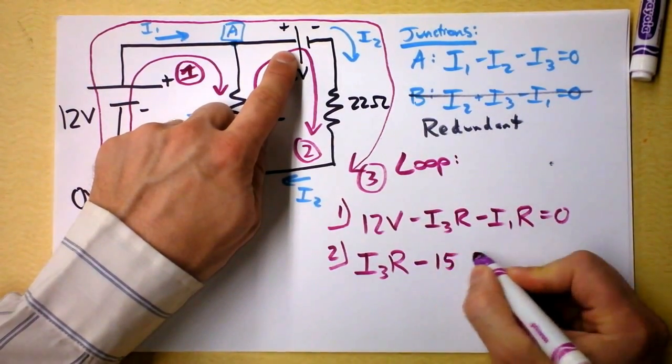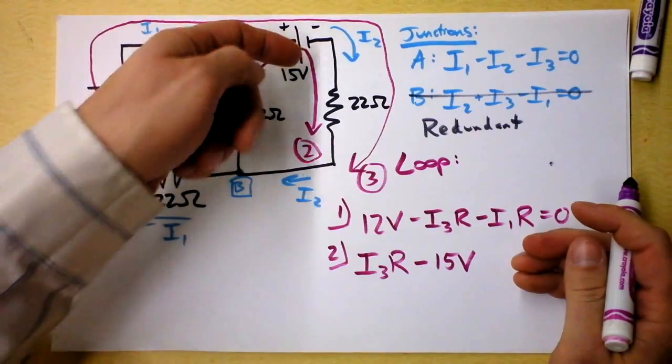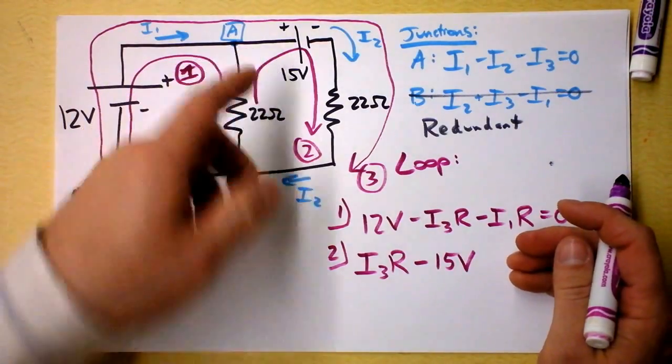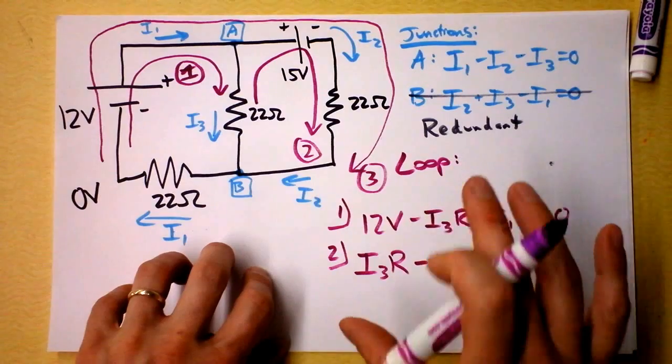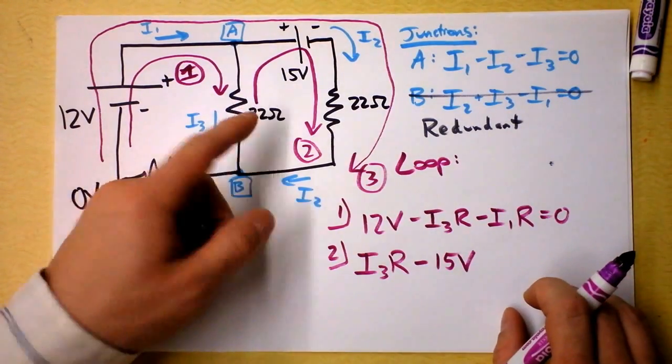I'm also going the wrong way through that battery. So I'm going to subtract 15 volts. Weird. Weird. OK, so maybe I made some of these definitions wrong. But that's OK. I'm just going to get minus signs in my variables. I'll still be able to tell you what the current is and which way it's going.